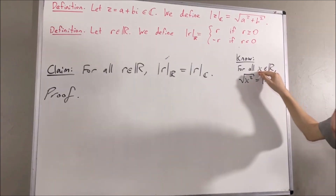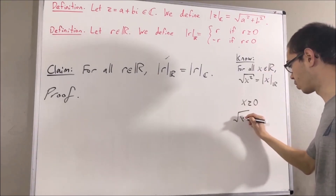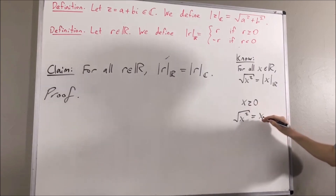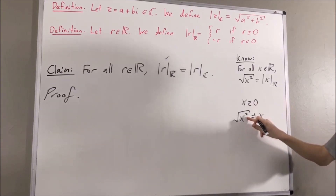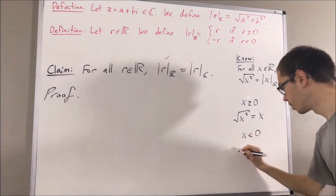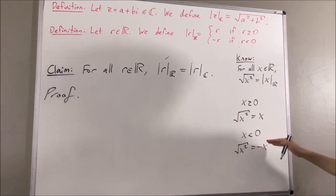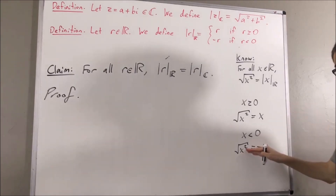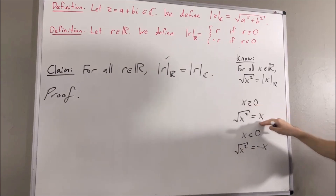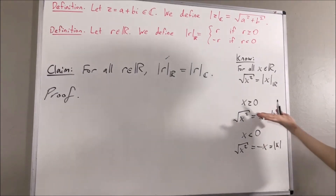That makes sense, because if we consider an arbitrary real number x: if x is greater than or equal to zero, then the square root of x squared is equal to x, since x is the non-negative real number such that squaring it gives x squared. On the other hand, if x is less than zero, then the square root of x squared must equal negative x, because negative x is greater than zero, and (−x)² = x². So in either case, the square root of x squared equals the absolute value of x.